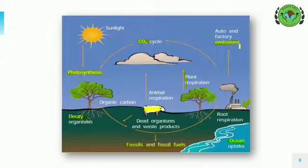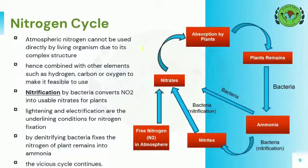Now we can move on to the nitrogen cycle. Atmospheric nitrogen cannot be used directly by living organisms due to its complex structure and hence it is combined with other elements such as hydrogen, carbon or oxygen to make it feasible for use. Plant remains are acted upon by bacteria called bacillus and are converted into ammonia. We call this process ammonification.